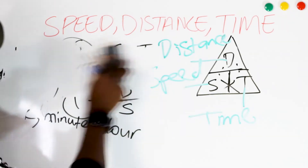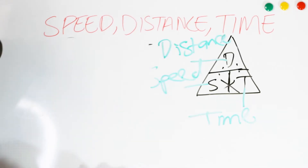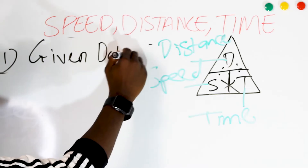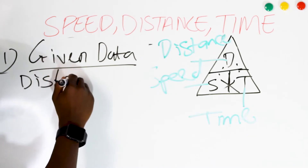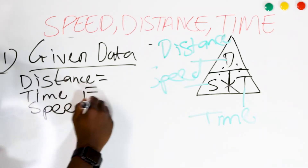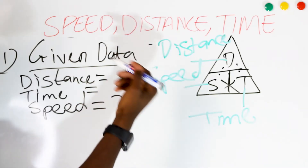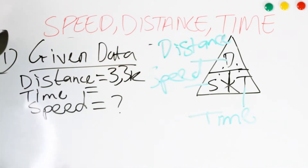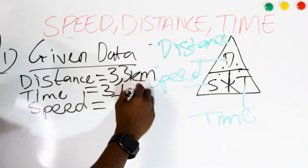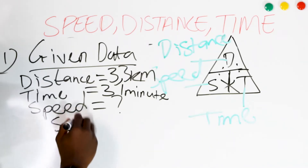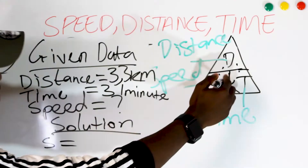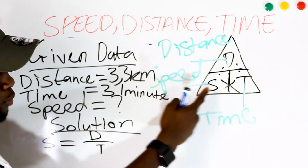Now let's begin calculations. Number one: let's calculate speed with a given data. We are given the distance and time, and we need to calculate speed. The distance is 3.3 kilometers and the time is 31 minutes. The first thing we do is determine the formula — for speed, the formula is distance over time.